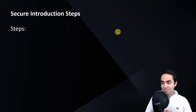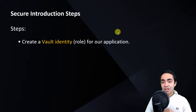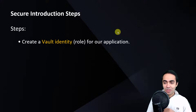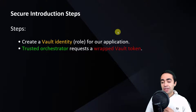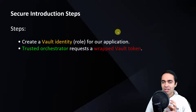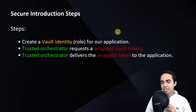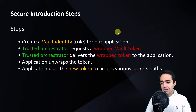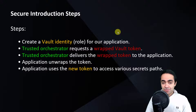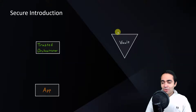The secure introduction steps are generic and can be applied in different environments. First, create a Vault identity or role for your application. Second, you need a trusted orchestrator that requests a wrapped Vault token — it's not the actual token. Third, the trusted orchestrator delivers that wrapped token to the application. Fourth, the application unwraps the token and uses the new token to access various secrets stored inside Vault.